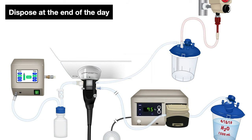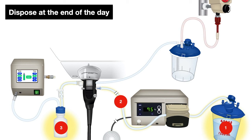How about the rest of the items? The water jug or water container for the auxiliary water jet and its tubing, the air water bottle, and the water bottle for the air water lens cleaner as well as its tubing can be disposed of at the end of the day.